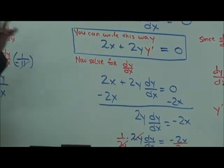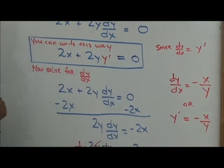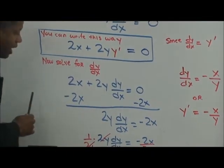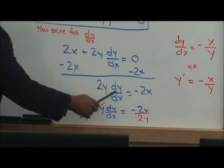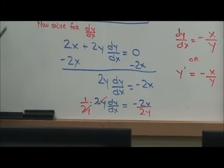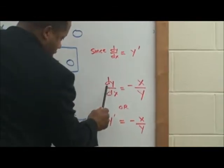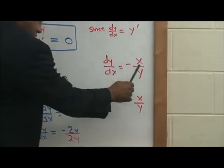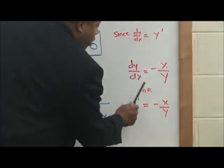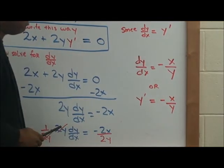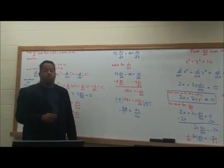Now we're going to solve for dy over dx. We take negative 2x to both sides, giving us 2y dy/dx equals negative 2x. Then we multiply both sides by 1 over 2y, and we end up with dy over dx equals negative x over y, since 2 divided by 2 is 1. You can also write this as y prime equals negative x divided by y. This concludes our video on implicit differentiation.